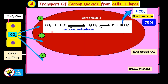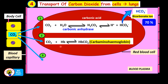The second method of transport of carbon dioxide is as carbaminohemoglobin. Carbon dioxide diffuses into erythrocytes and combines with hemoglobin (Hb) to form carbaminohemoglobin. 23% of carbon dioxide is transported as carbaminohemoglobin.